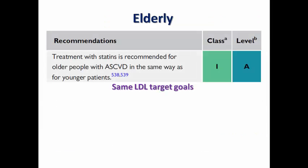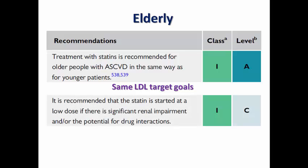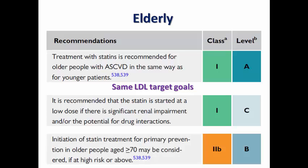In the elderly, treatment goals are still the same regarding LDL, and treatment with statin is recommended in the same way as in younger patients. It is recommended to start statin at a low dose if there is significant renal impairment, to avoid potential drug interactions. It is class 2B to initiate statin for primary prevention in older patients more than 70 years if they are considered high or very high risk, due to the lack of sufficient trials in this age group.